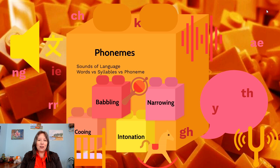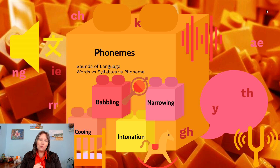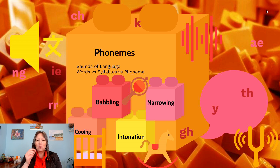Some sounds in English are made up of two or more letters but cannot be broken down further. For instance, the phoneme 'th' cannot be separated into a t and h sound. In contrast, 'br' in 'bread' can be broken into b and r — those are two phonemes. Similarly, 'ch' doesn't break down further, and the 'ng' at the end of 'sing' is a single guttural phoneme, not a separate n and g.